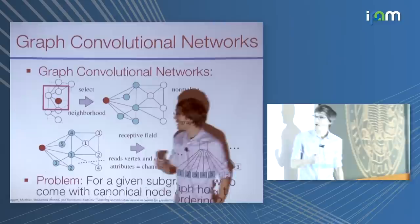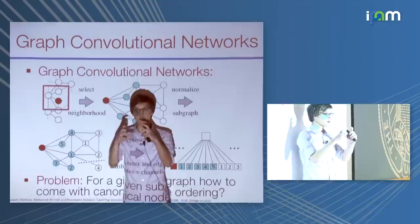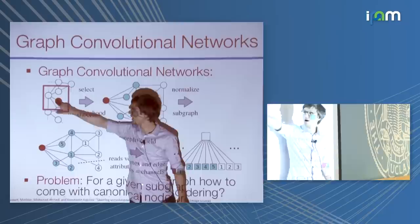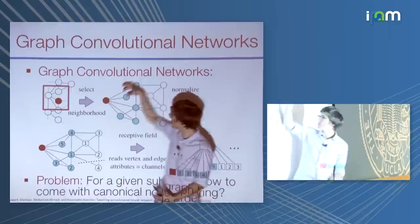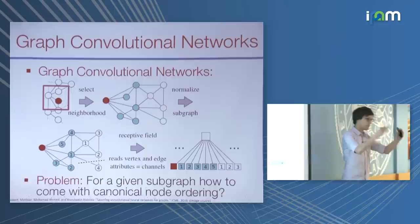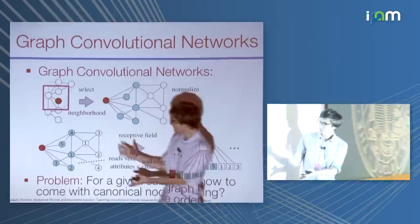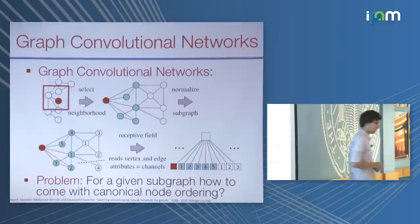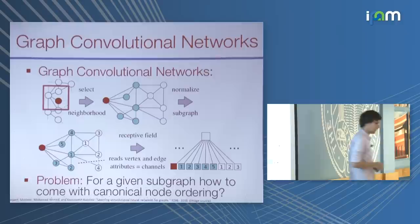A second approach is to define a sliding window centered at a particular node — similar to the convolution example. You take the neighbors adjacent to your node of interest, but then you have to decide how many neighbors to take and in what order to put them so you can feed them into a neural architecture. The problems are that you are limited to a fixed neighborhood size and you have to canonicalize these different neighborhoods so you can feed them through the same architecture. These approaches have lots of practical problems.